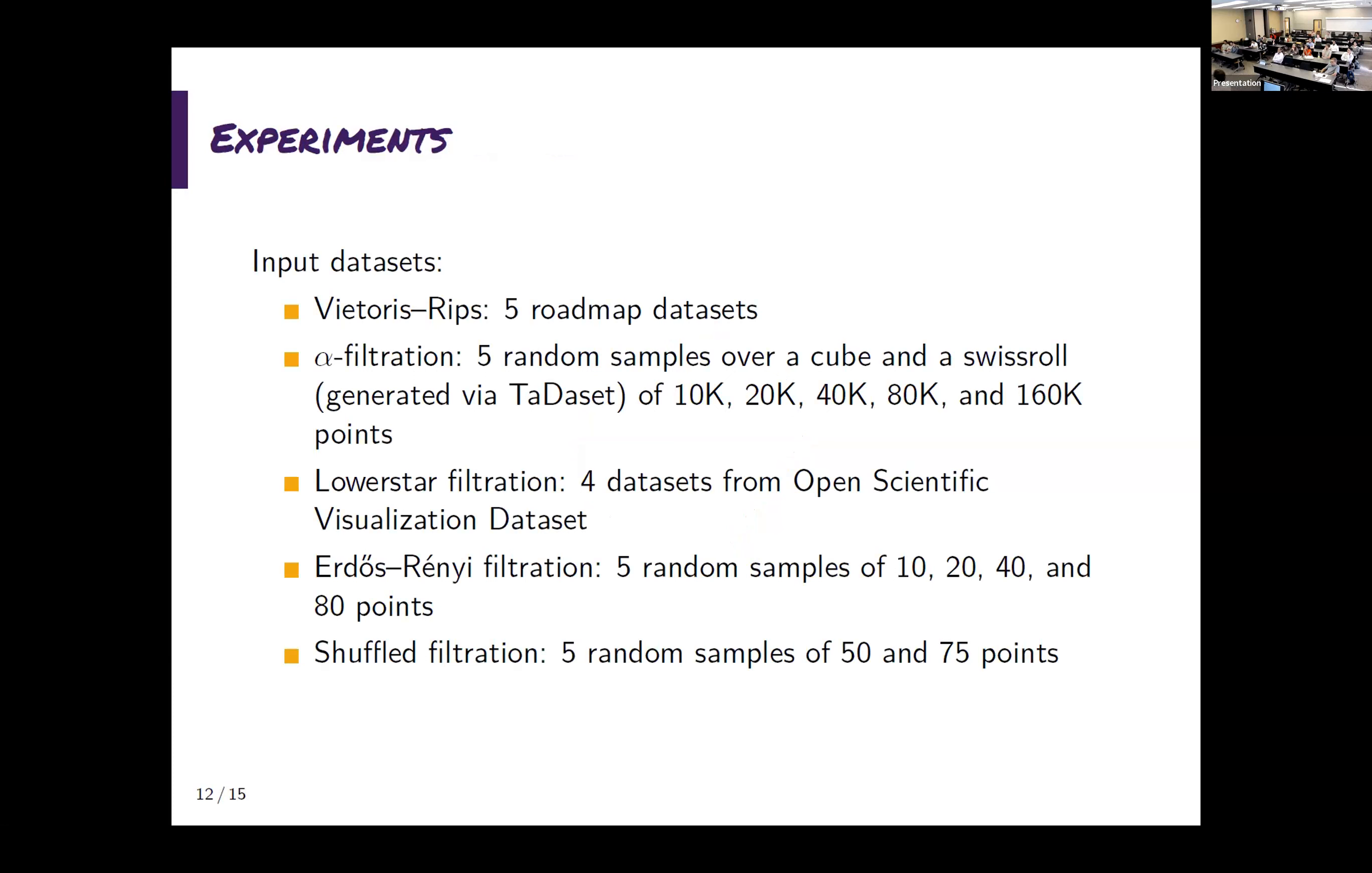Okay, so we did some experiments to figure out what was, because I haven't implemented this, so there is no implementation yet. So the experiment that we did, we wanted to count two things and we used fast persistence, the reduction number. So we wanted to count how many times a column is added to something else, which means how many times I need to undo this operation. And we wanted to check how many times a column that was added to something else was actually added to something zeroed out. So how many times we can use the efficient version. This is just a bunch of datasets. Let me go over them quickly. Vietoris-Rips, five datasets from the roadmap paper. Alpha filtration, we generated datasets, five random samples over a cube and a Swiss roll, embedded in R^3, I think. Yeah, certainly.